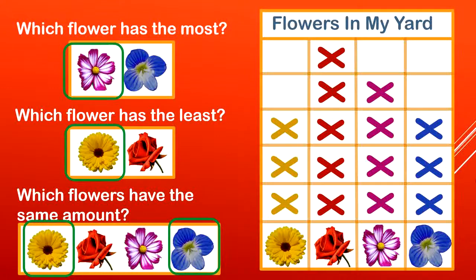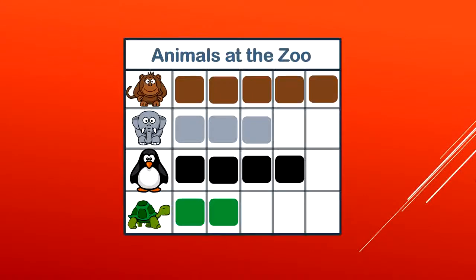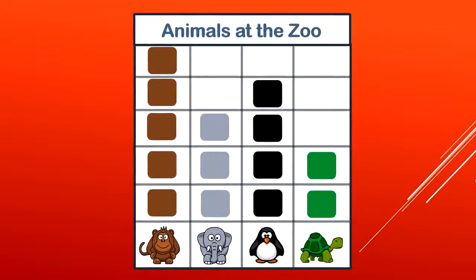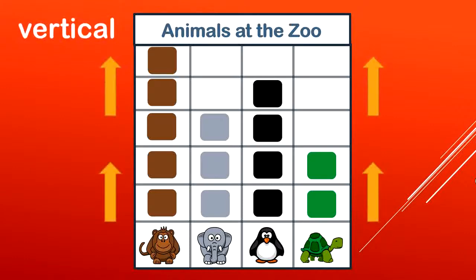Great job. Just to review, when we look at a bar graph, we can either see the information going from left to right, known as horizontal, or we can see the information going up and down. That's called vertical. Great job boys and girls. You can do this.